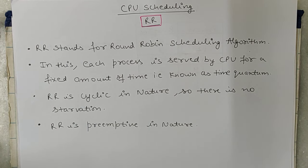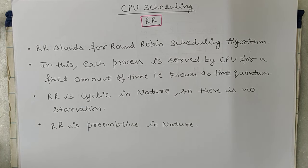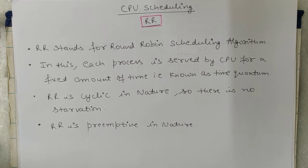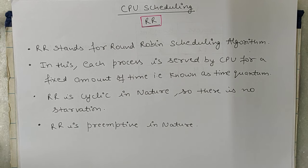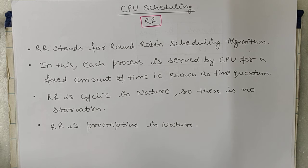Hello everyone. In this tutorial I will discuss the next CPU scheduling algorithm, that is RR. RR stands for Round Robin Scheduling Algorithm. In RR we have a time quantum — every process will access the CPU for a particular amount of time, and that particular amount of time is known as time quantum. RR is cyclic in nature, so there is no starvation because every process will get the CPU once.